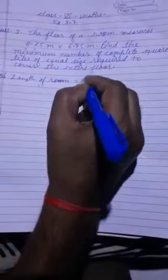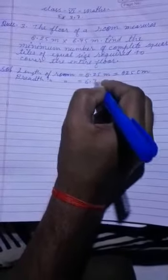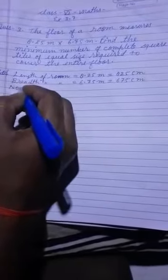Now let us start. Length of room equal to 8.25 meter, equal to 825 centimeter. Breadth of room equal to 6.75 meter, means 675 centimeter.